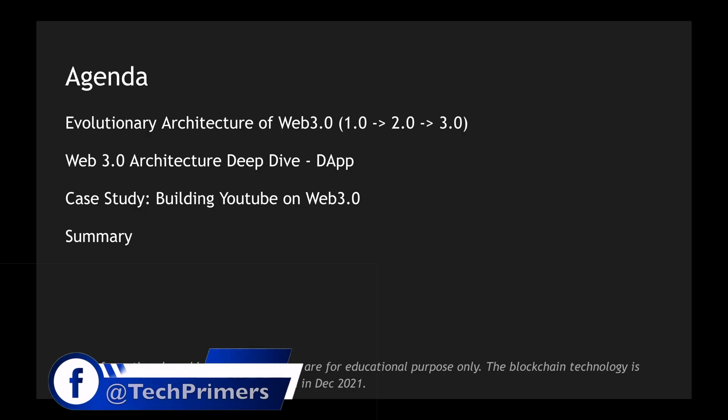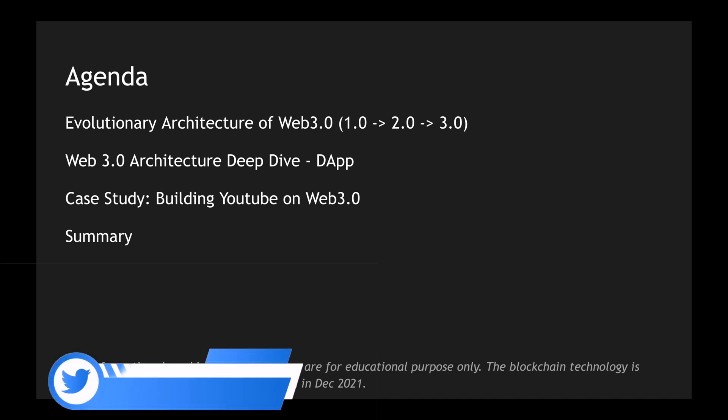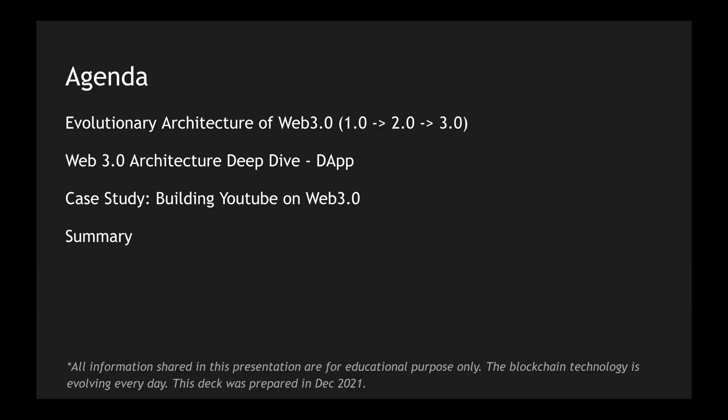The agenda for this video is simple. We are going to see the evolution of the internet — the web: 1.0, 2.0, and 3.0. We'll see an evolutionary architecture on how the web evolved, with examples of how Web 1.0 looked, how 2.0 currently is, and how we envision Web 3.0. I'll also overlay real-time examples, dig into decentralized applications (dApps), and finish with a case study on deploying YouTube on a blockchain network.